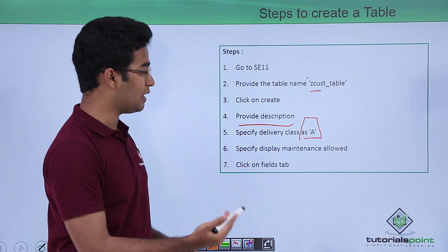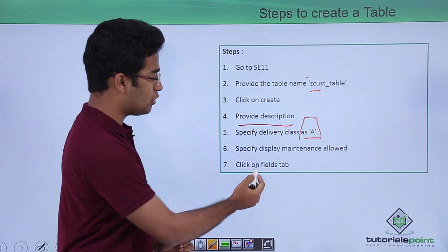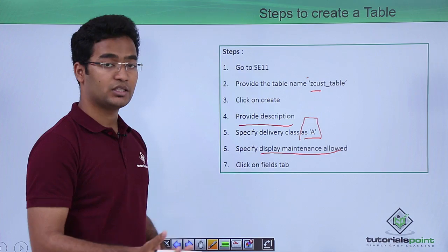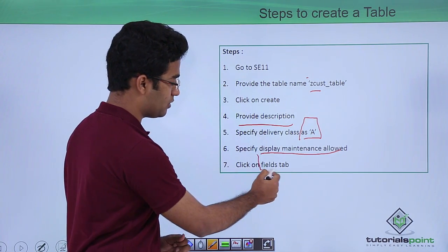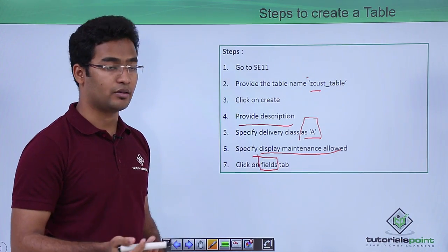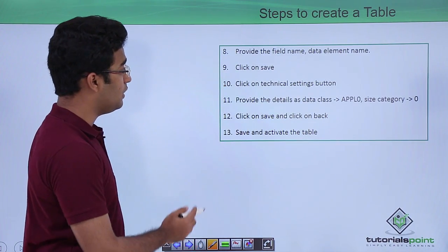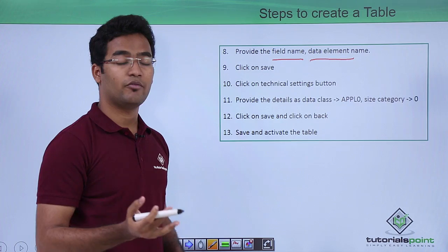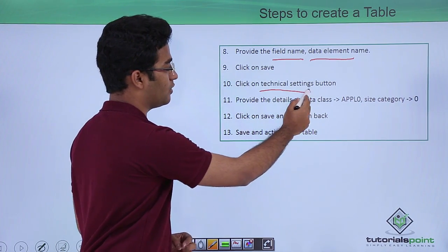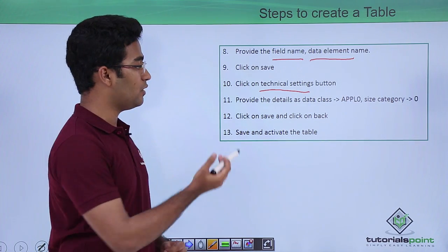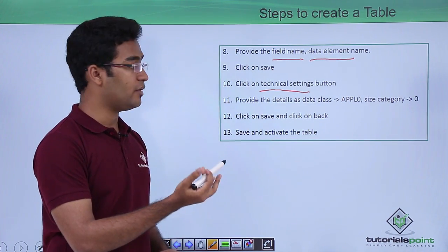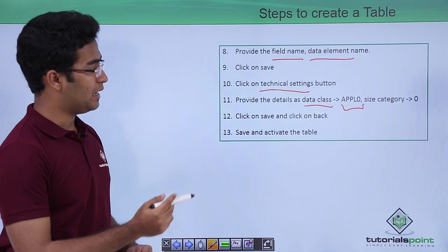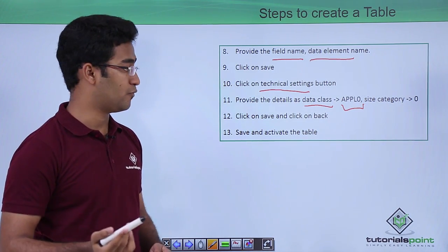I will be explaining what exactly delivery class is. When we have provided the delivery class, we also have to specify the display maintenance allowed, and then we click on the Fields tab. On the fields tab, we create our fields. We have to provide the field name and the data element name, then click Save, then make the technical settings. To make the technical settings, there is a button known as Technical Settings — we click on that and provide our data class. For this case, we are providing the data class as APPL0, and the size category as 0.